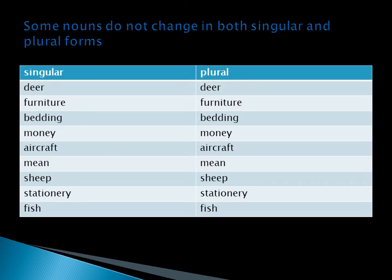Some nouns do not change in both singular and plural — they remain the same. For example, the plural of money is money, not monies. Other examples: aircraft, mean, sheep, stationary, fish — these do not change.